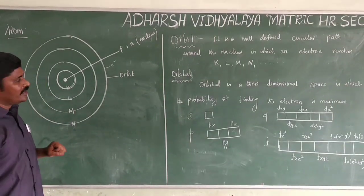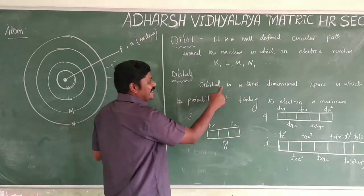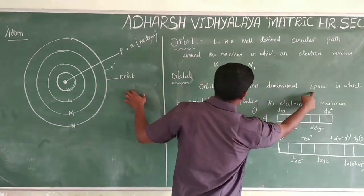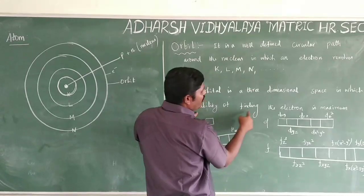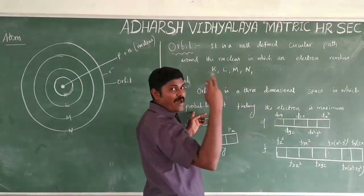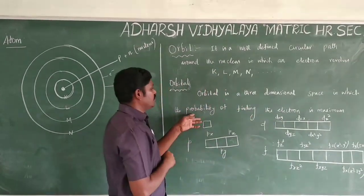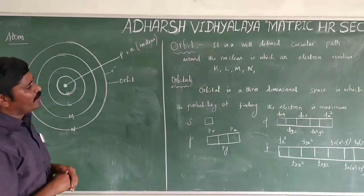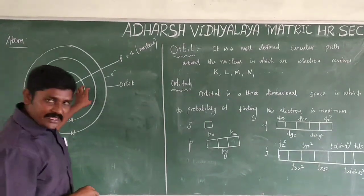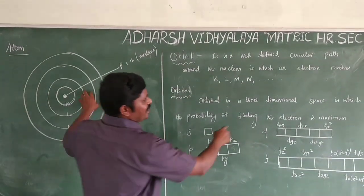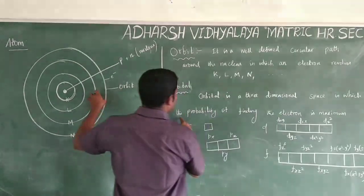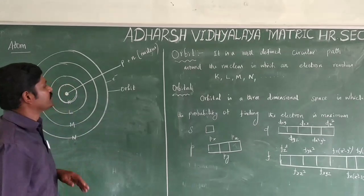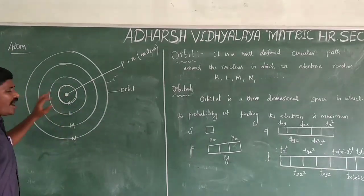The next concept is orbital. The orbital is the three-dimensional space in which the probability of finding an electron is maximum. This three-dimensional space where the probability of finding the electron is maximum is called an orbital.